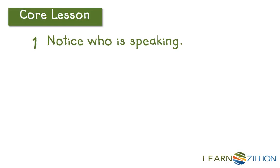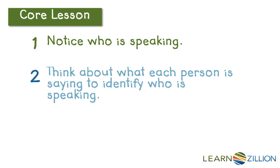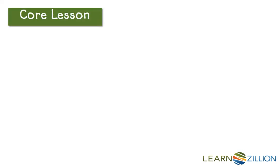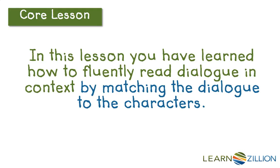So, here are the steps that I just did to help me read this passage with more expression. First, I noticed who was speaking and highlighted their names. I thought about what each character was saying to identify who was speaking. Then I thought about what I knew about each character, and I matched my voice to them. In this lesson, you have learned how to fluently read dialogue in context by matching the dialogue to the characters.